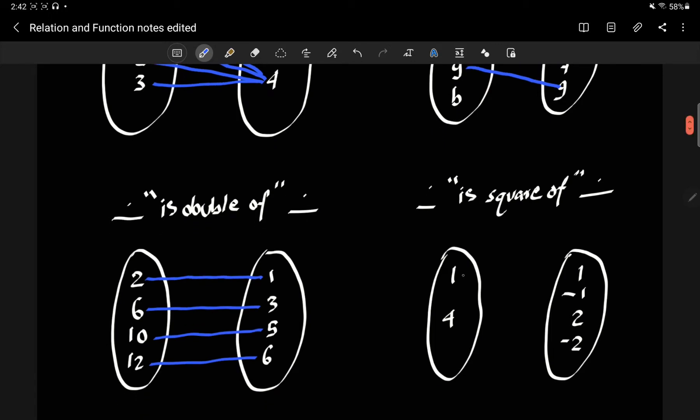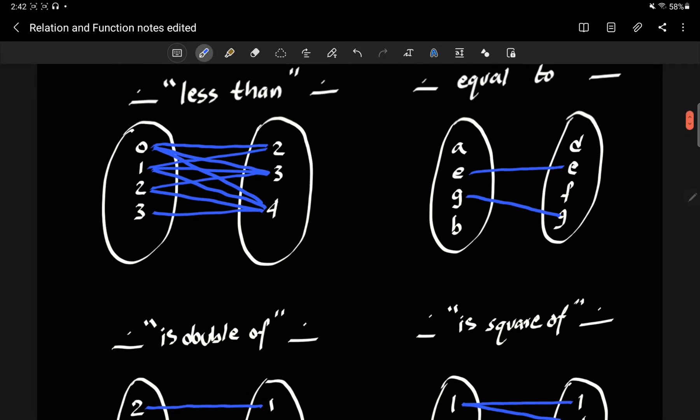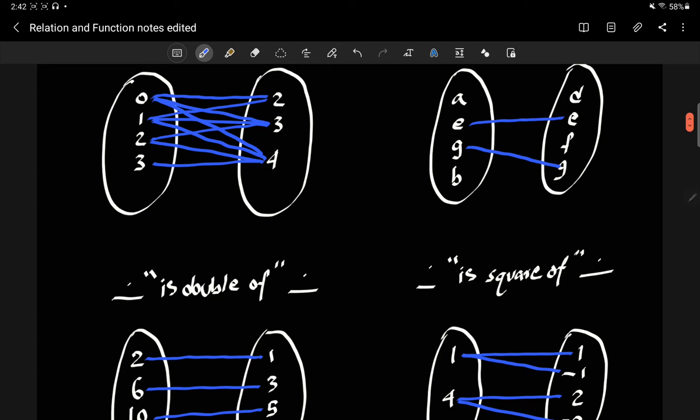Is square of. Well, 1 is a square of 1 and negative 1. 4 is a square of 2 and negative 2. So what we have here is, you have all these different diagrams you can make. And there's so many things that can happen.